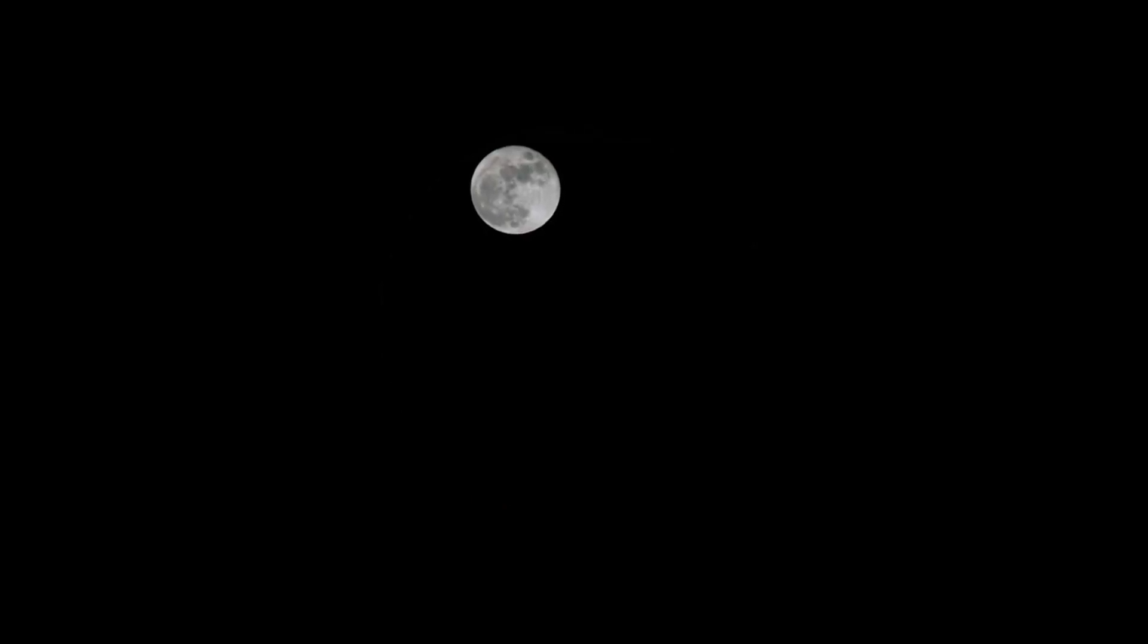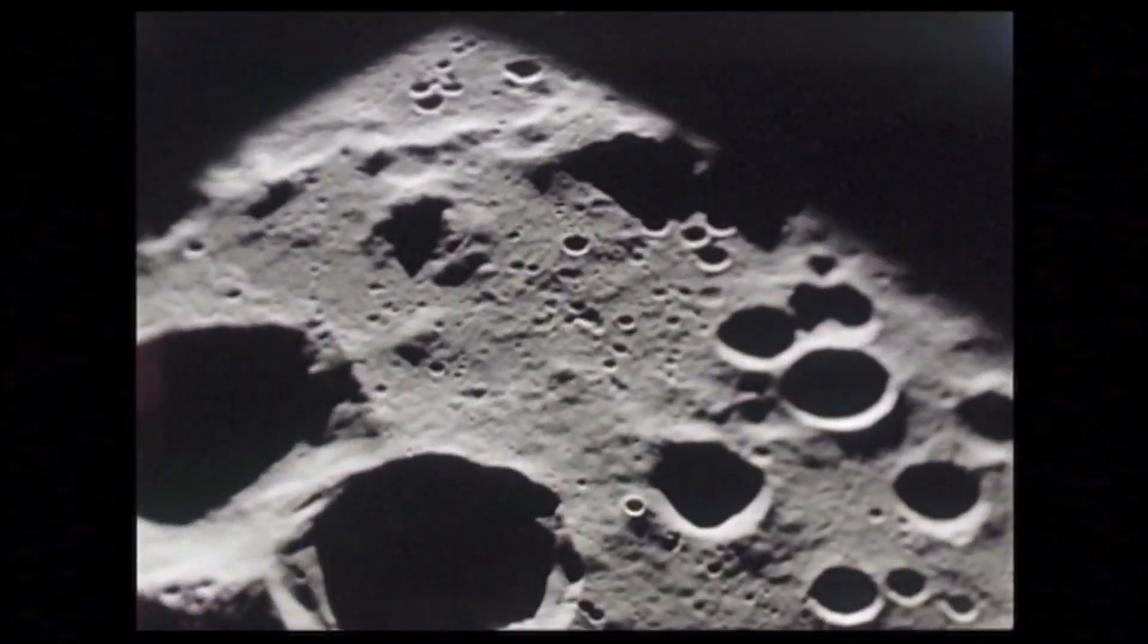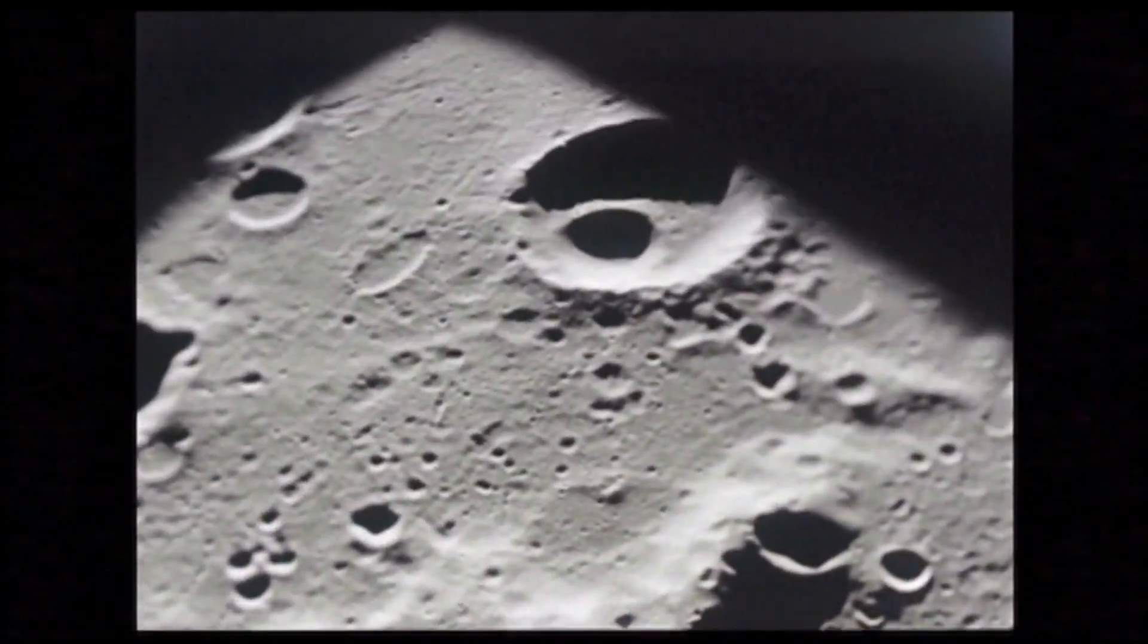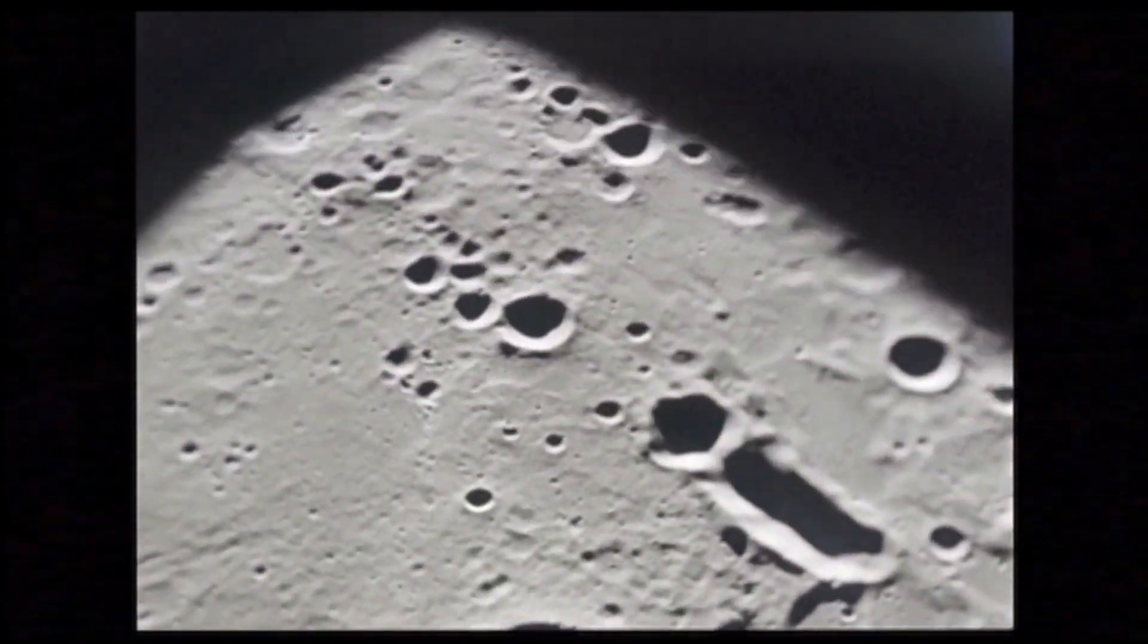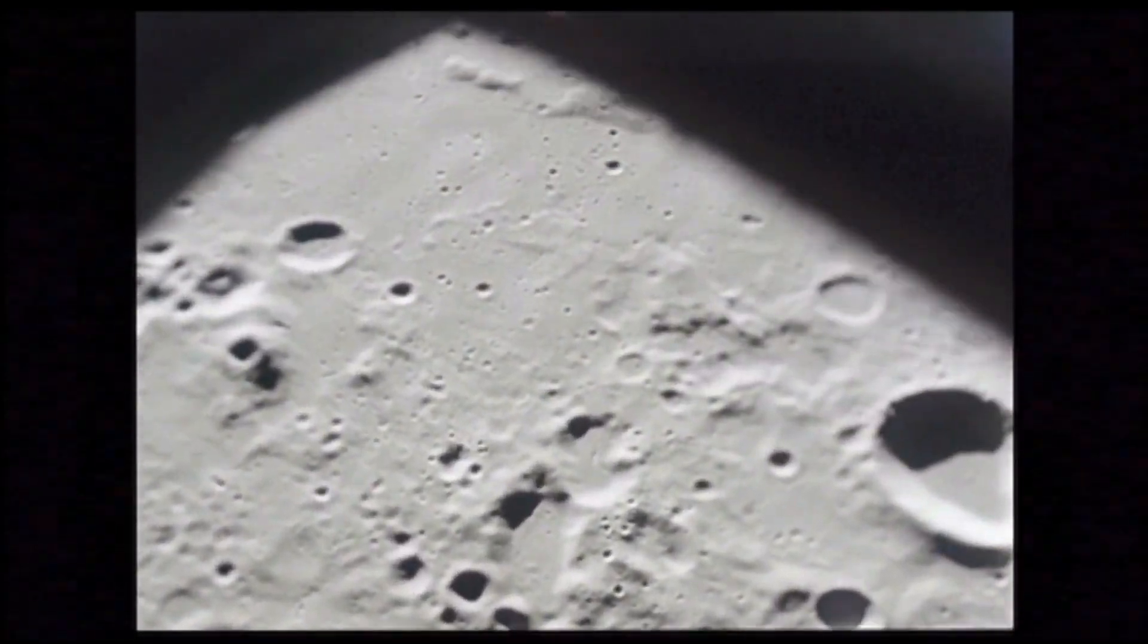Unlike the near side, covered with dark, lava-filled plains known as Maria, the far side is dominated by rugged highlands and fewer Maria. These striking differences puzzled scientists until they recently proposed a compelling explanation, shedding light on the moon's mysterious past.